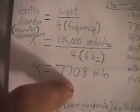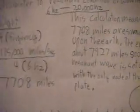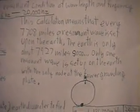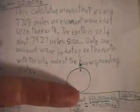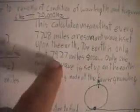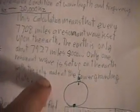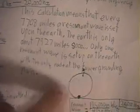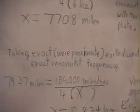That gives you 7,708 miles, and that's showing you that the antinode will be right on the opposite side of the earth because the earth is 7,927 miles. This calculation means that every 7,708 miles, a resonant wave is set up upon the earth. The earth is only about 7,927 miles, so only the resonant wave is set up on the earth with the only node at the tower grounding plate.